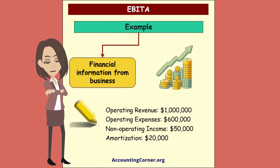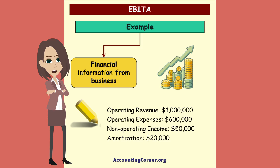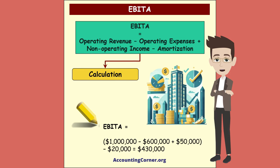Let's explore an example. Suppose a company has the following financial information: operating revenue $1 million, operating expenses $600,000, non-operating income $50,000, and amortization $20,000. By applying the EBITDA formula and making calculations based on the given data, EBITDA equals $430,000.